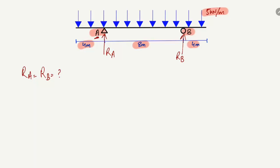There is a very simple and easy trick to find the support reactions when you have a symmetrical overhanging beam. By symmetrical, I mean the load is uniformly distributed acting on the whole beam, and the left overhanging length of 4 meters is the same as the right overhanging length. In this case, you can find the support reactions in a very simple method.